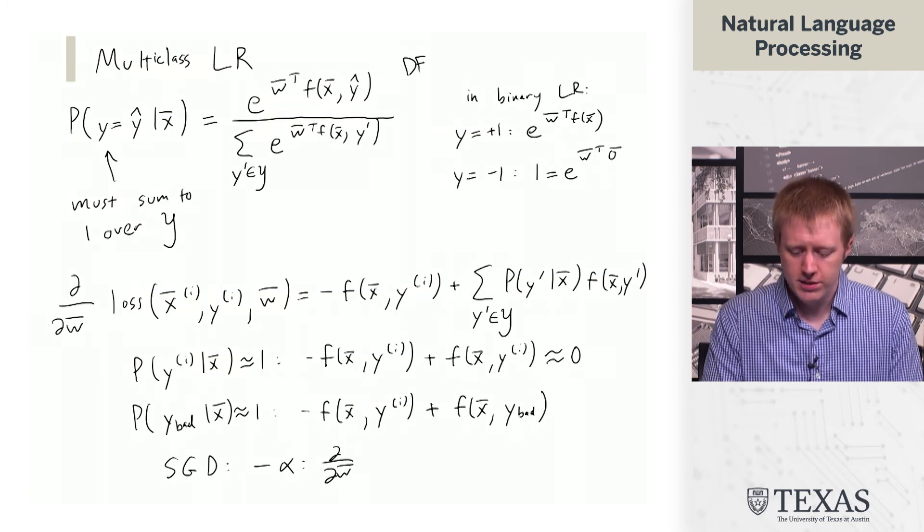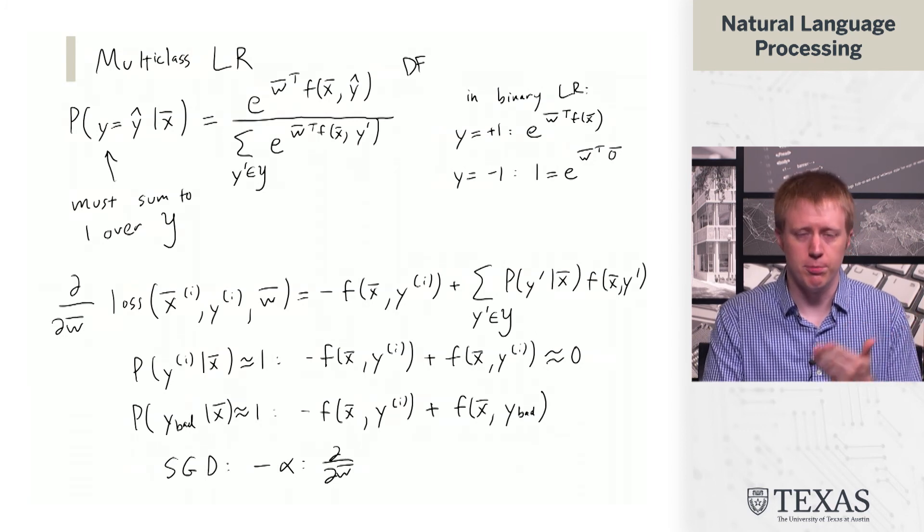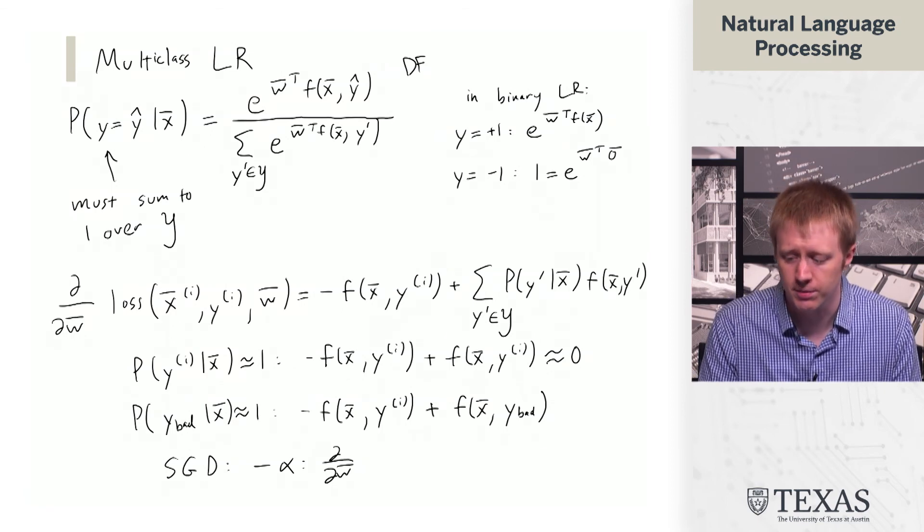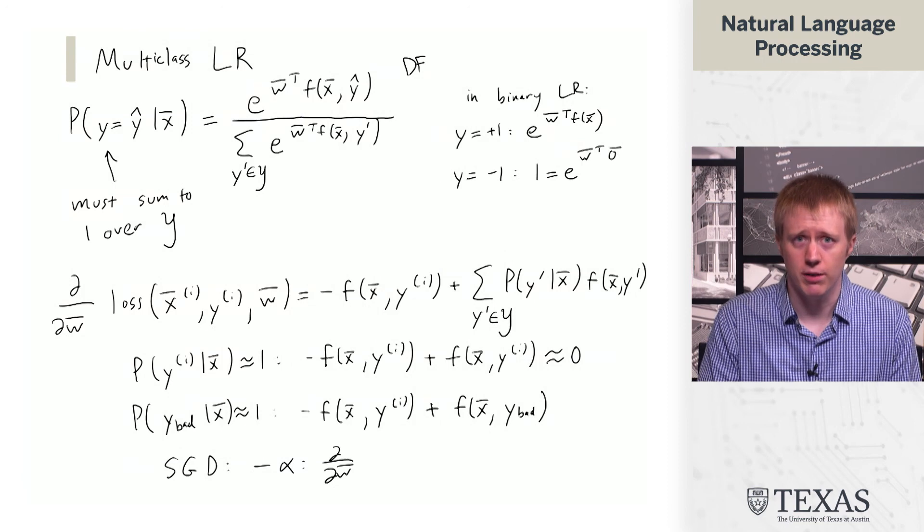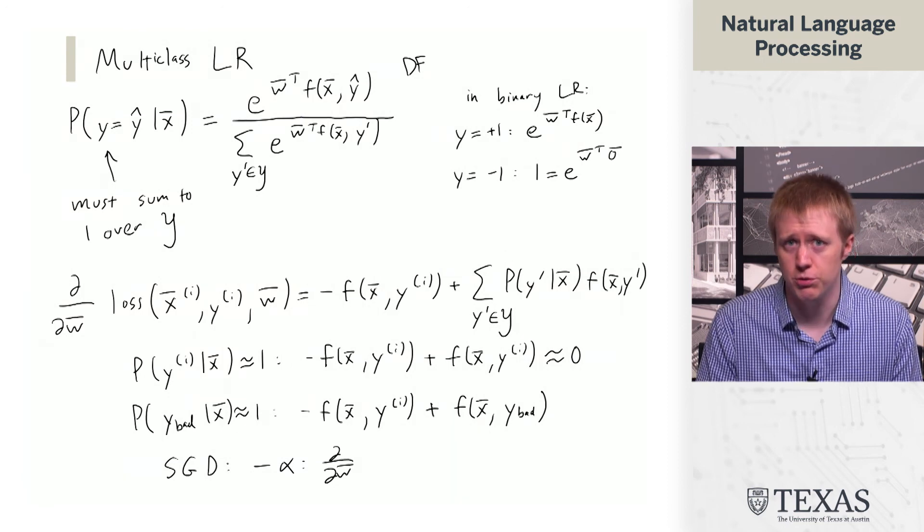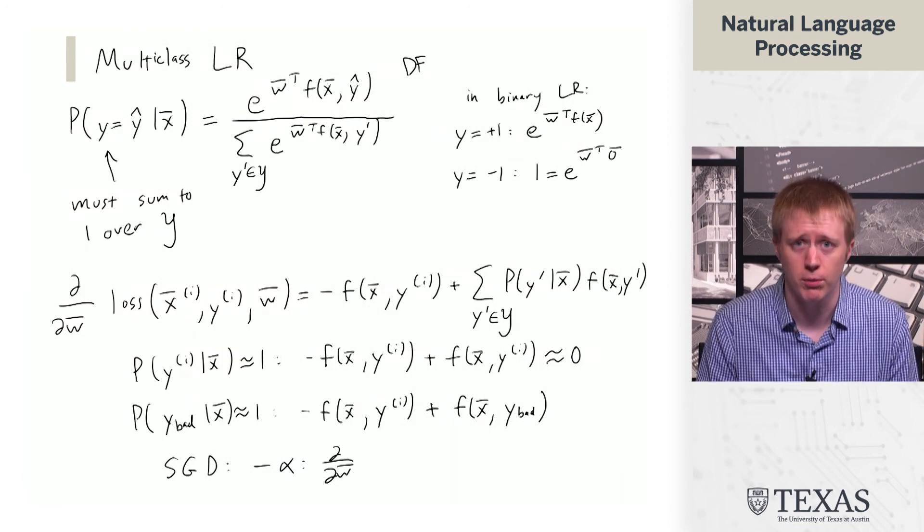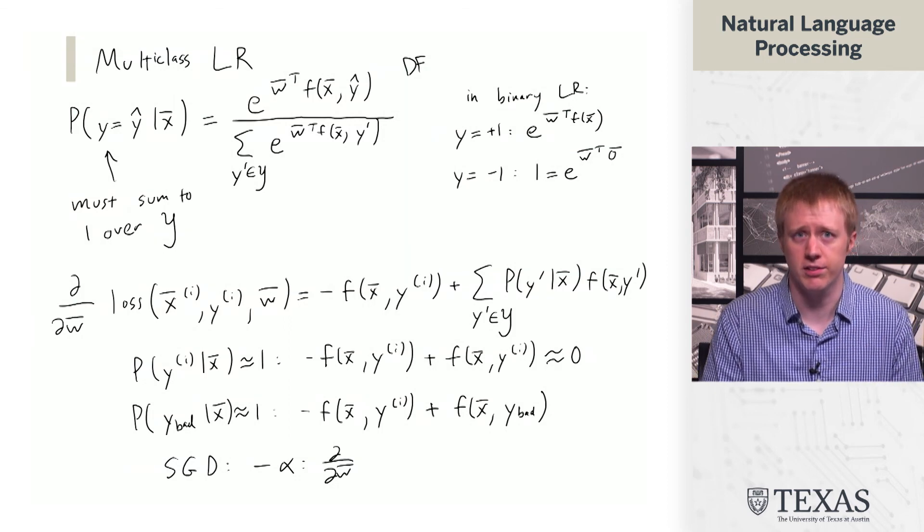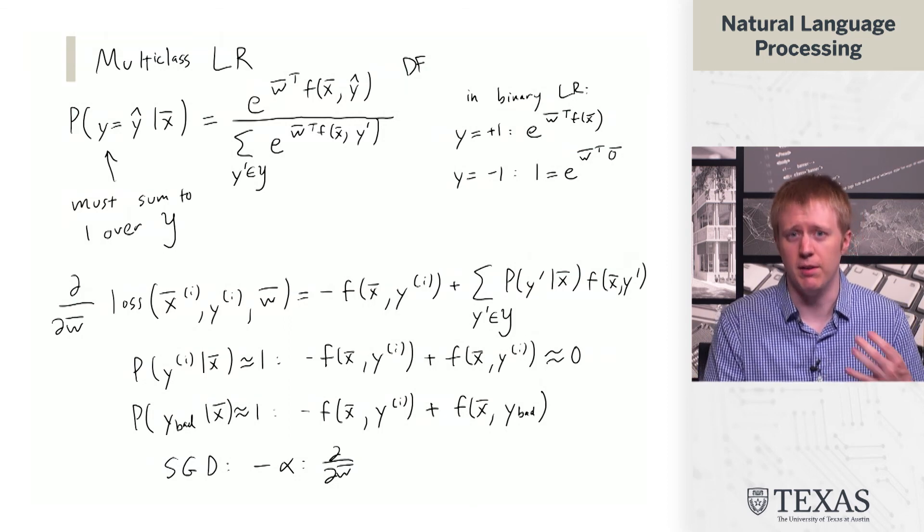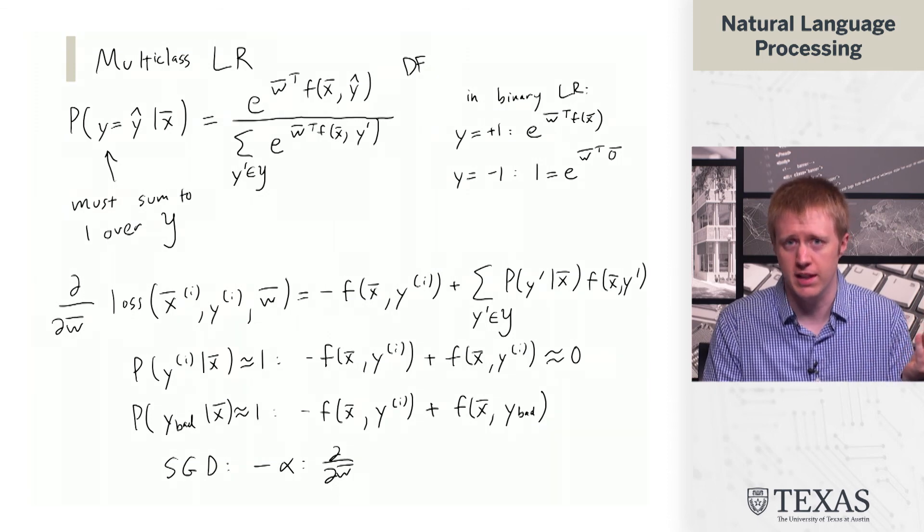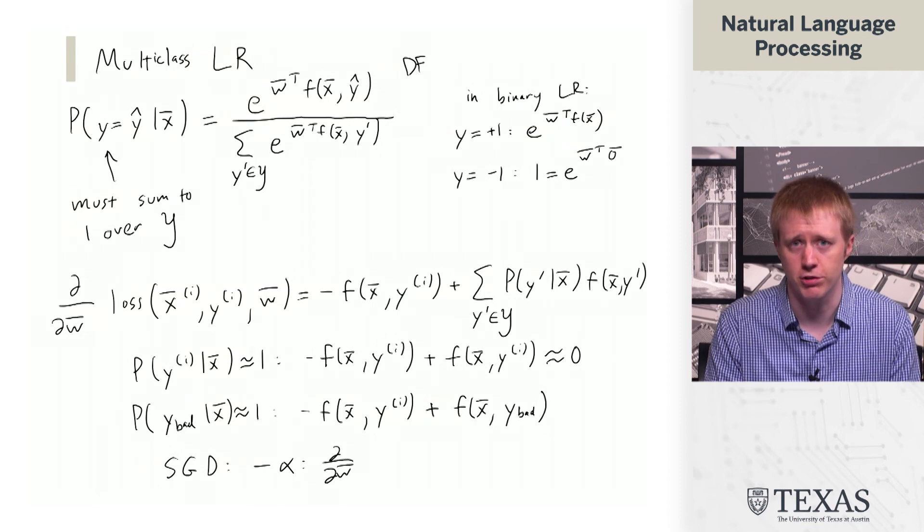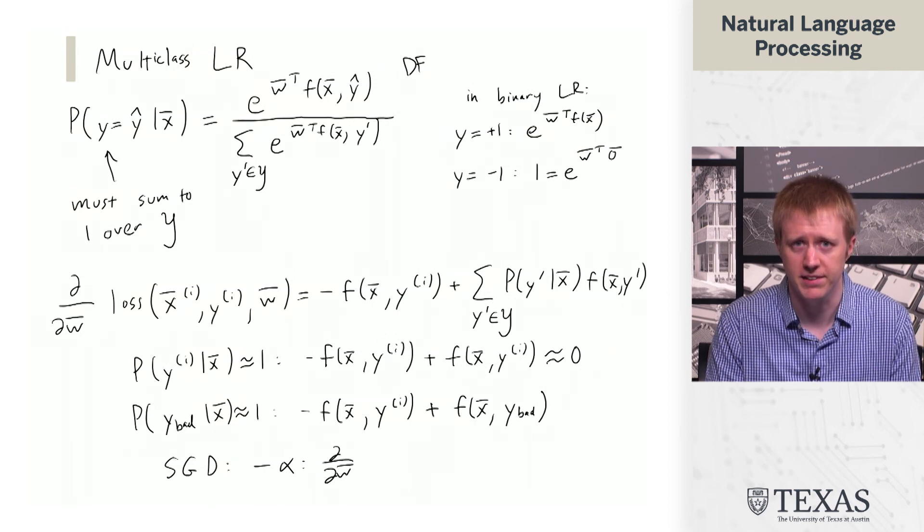So these are the kind of generalizations of perceptron and logistic regression to these multiclass cases here. These are going to be algorithms that we're going to kind of come back to throughout the course going forward. And we're going to revisit this when we come to neural networks and kind of embrace the different weights version there and kind of embrace different features when we think about structured prediction. That's the end of this segment.